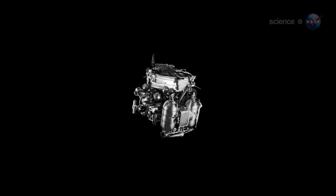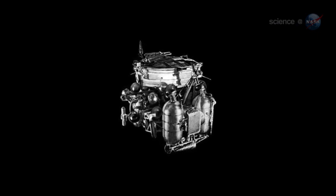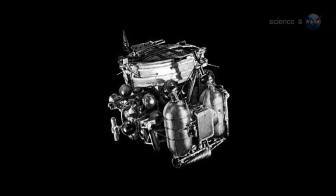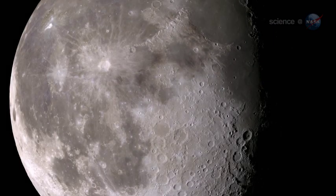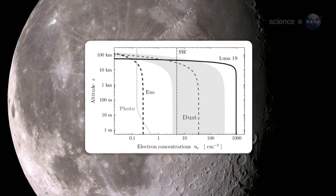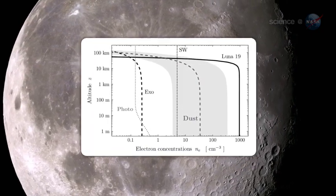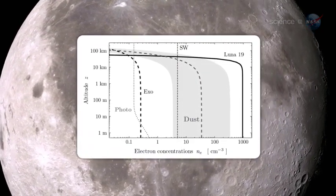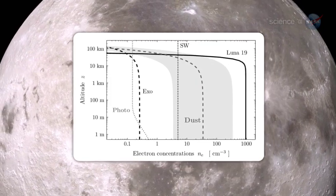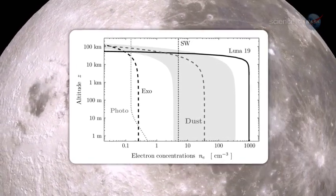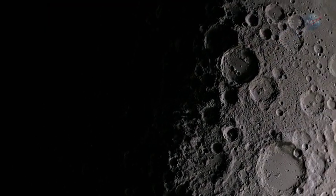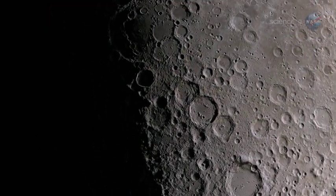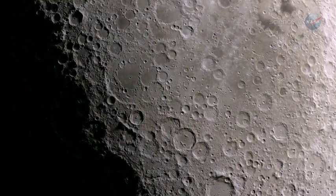The first convincing evidence for an ionosphere around the Moon came in the 1970s from the Soviet probes Luna 19 and 22. Circling the Moon at close range, the orbiter sensed a layer of charged gas tens of kilometers above the lunar surface, containing as many as 1,000 electrons per cubic centimeter, a thousand times more than any theory could explain. The idea of an airless Moon having an ionosphere didn't make much sense, but the evidence seemed compelling.